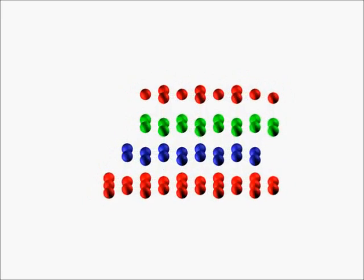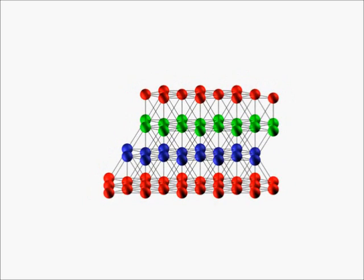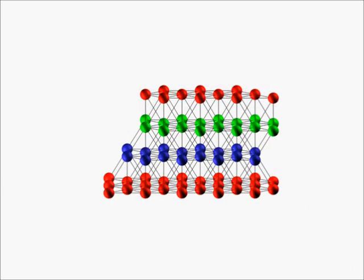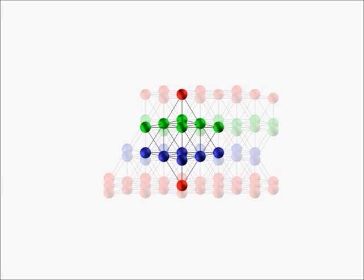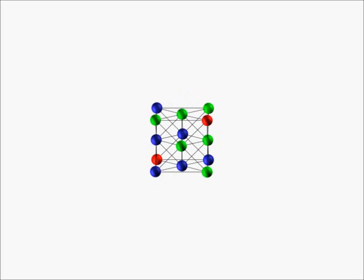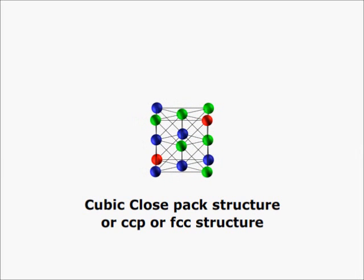Now again making the spheres little smaller and joining their centers by straight lines we get the shape of this packing like this. The unit cell of such a packing is this. This is nothing but a face centered cubic lattice. So this type of packing is called cubic close pack or simply CCP or even FCC structure.